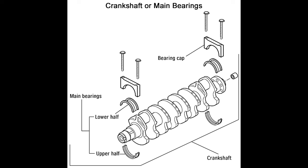Material used: Being of the same split-sleeve type, both rod and main bearings are made of similar materials. While most of the material used is steel to impart strength, other materials like a copper-lead-tin alloy known as babbitt, nickel, white metal, or aluminum are added to ensure that the bearing is also soft enough not to damage the shaft. However, rod bearings are smaller than main bearings in every engine.